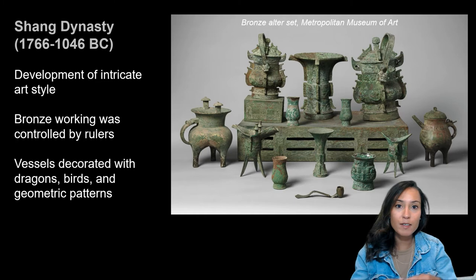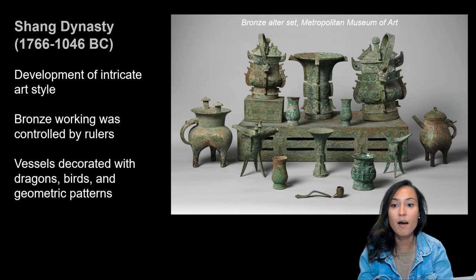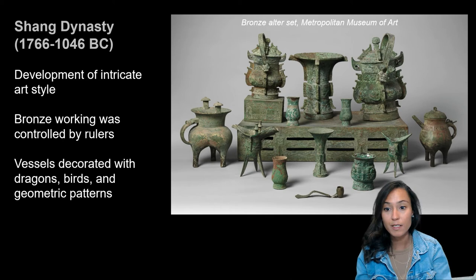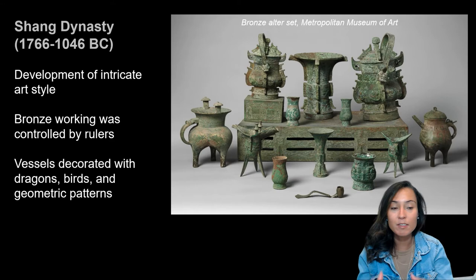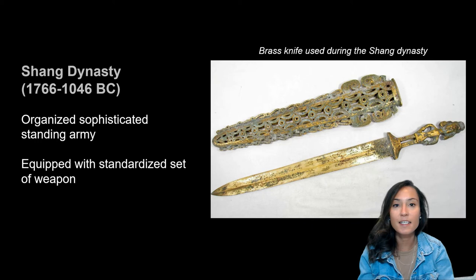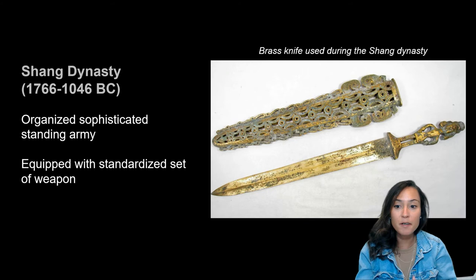In addition to elaborate royal burials, during the Shang Dynasty — which lasted from about 1760 to about 1046 BC — we also see the development of intricate art styles, especially elaborate bronze objects. Bronze working was controlled by rulers and used almost exclusively for the production of food and drinking vessels, decorated with dragons, birds, and geometric patterns. We also see the development of a sophisticated standing army, with soldiers conscripted to serve and equipped with a standardized set of weapons including bows and arrows, shields, small knives, and sharpening stones.